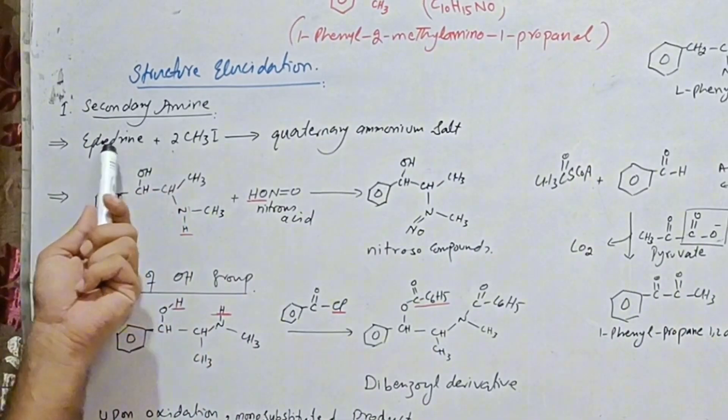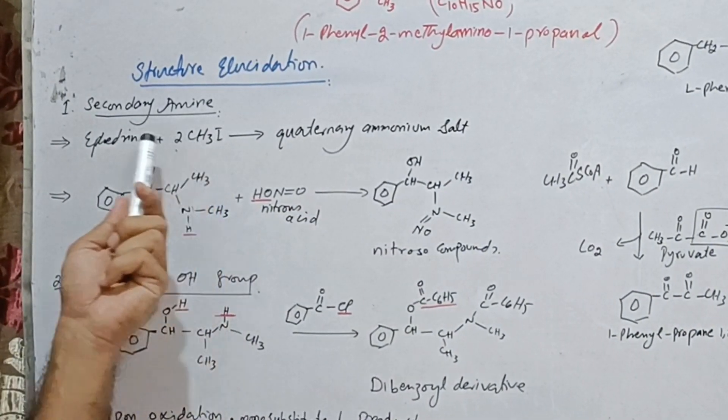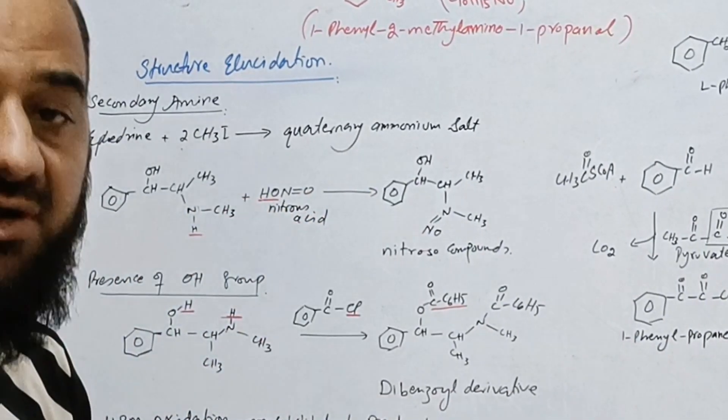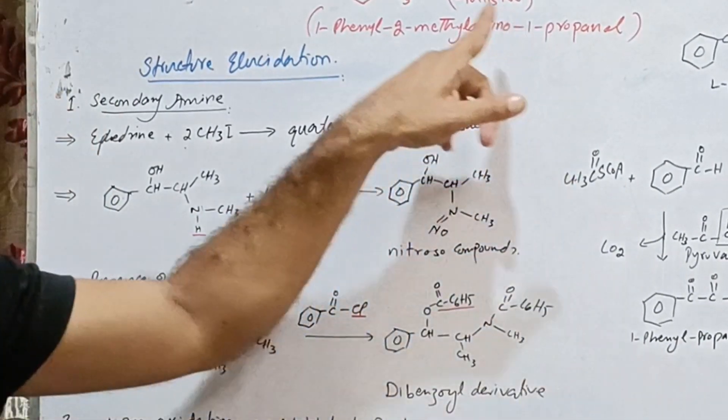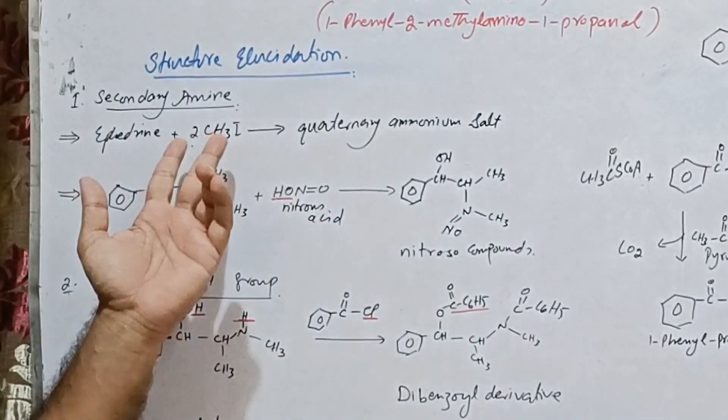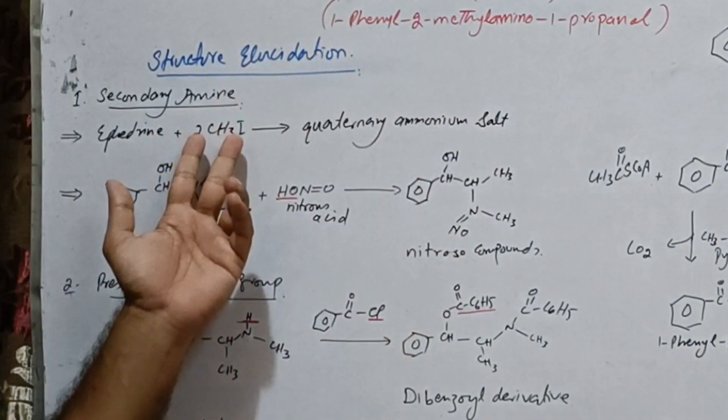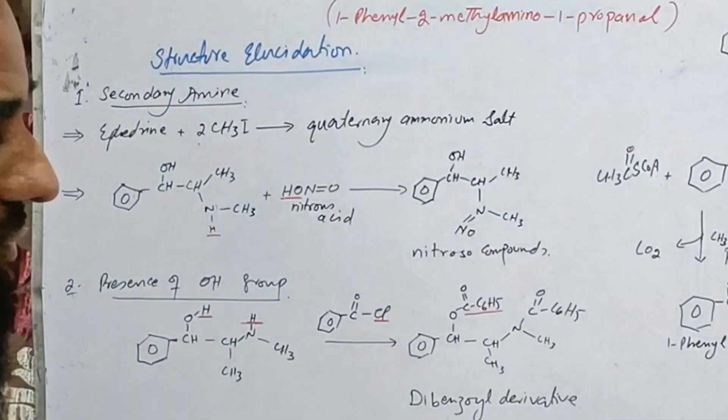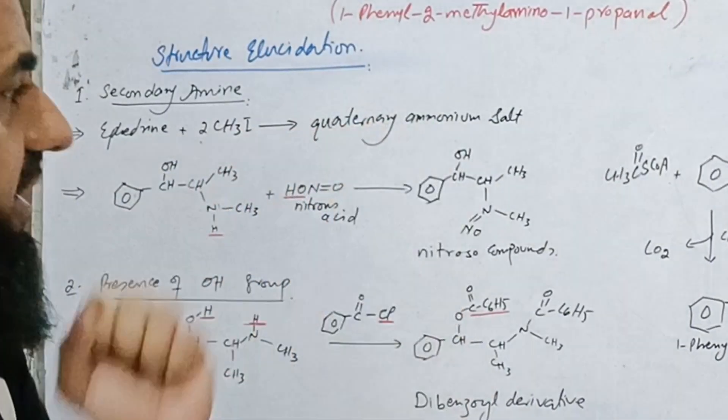it reacts with two molecules of methyl iodide to form quaternary ammonium salt. As nitrogen is already attached with two carbon atoms, so it only adds two methyl groups in order to form quaternary ammonium salt.